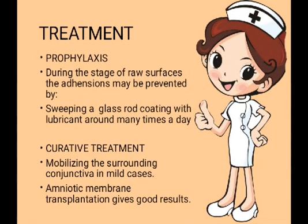For treatment, first is prophylaxis: during the stage of raw surfaces, sticking may be prevented by sweeping a glass rod coated with lubricant around the area many times a day. A glass rod is used because it does not cause infection. The glass rod coated with lubricant is applied to the part where sticking takes place to prevent adhesion. For curative treatment, mobilizing the surrounding conjunctiva is done in mild cases. Amniotic membrane transplantation also gives good results as a surgical treatment.